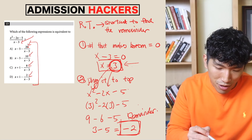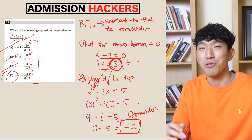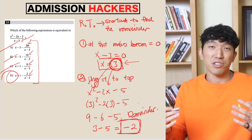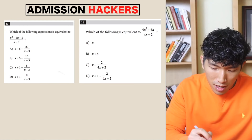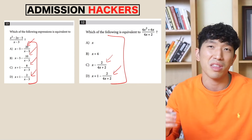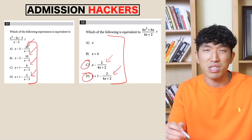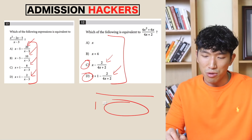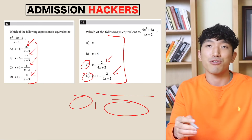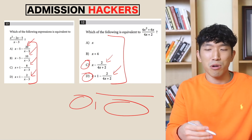Looking at the answer choices, A has a remainder of 20 — no. B is 10 — no. And D is minus 2, which matches. So we can quickly find the answer that way. However, this method doesn't always work. It only works when the answer choices all have different remainders. If two choices share the same remainder, you'd still be stuck between them and would need to do full synthetic division. So if remainders are all different, use remainder theorem. If not, stick to regular synthetic division.